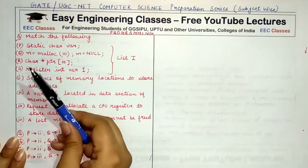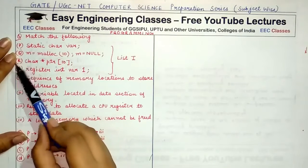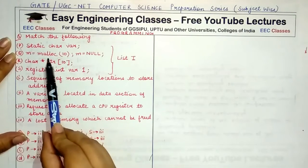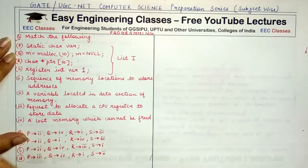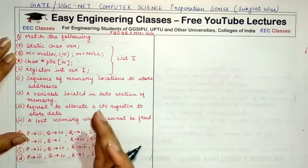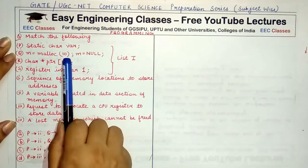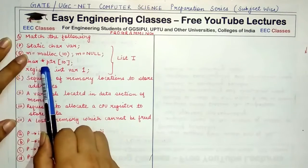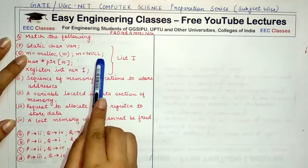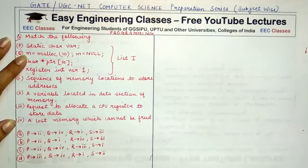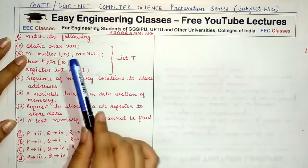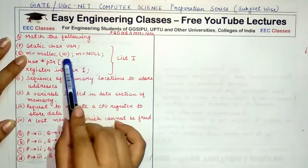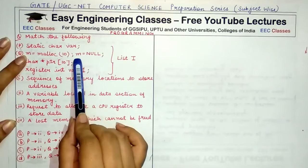For option Q, m = malloc(10) assigns a contiguous block of memory and returns a pointer to the starting location. When you then assign m = null, you are removing or emptying the address of those memory locations, making them no longer accessible. This is not a correct way to handle memory allocated through malloc, because such memory must be freed.